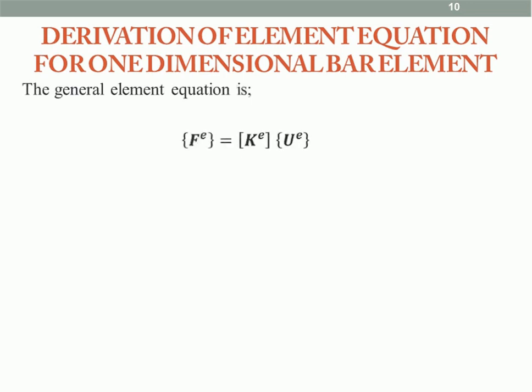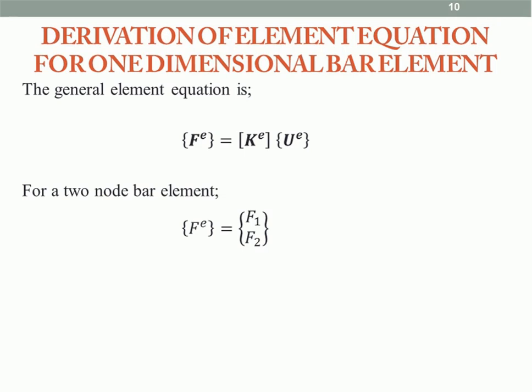Now we will discuss the derivation of the element equation for a one-dimensional bar element. Having derived the stiffness matrix, the general form of the element equation is: F_e equals K_e times U_e, where F_e is the element force vector, K_e is the element stiffness matrix, and U_e is the element displacement vector. For this bar element with nodes 1 and 2, F_e equals [F1, F2] and U_e equals [U1, U2].